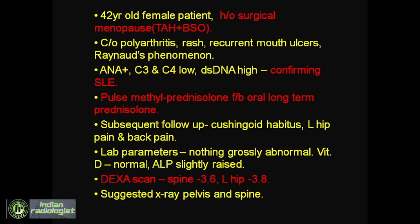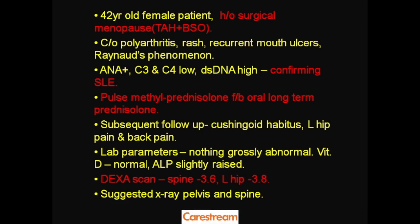Scenario number one: a 42-year-old female patient comes with a history of surgical menopause — a total abdominal hysterectomy and bilateral salpingo-oophorectomy done five years back. She presents with complaints of polyarthritis, rash, recurrent mouth ulcers, and Raynaud's phenomenon — a feeling of tingling, numbness, and cold in certain extremities, especially the fingertips. Out of the various lab tests asked for, what stood out was anti-nuclear antibody positive.